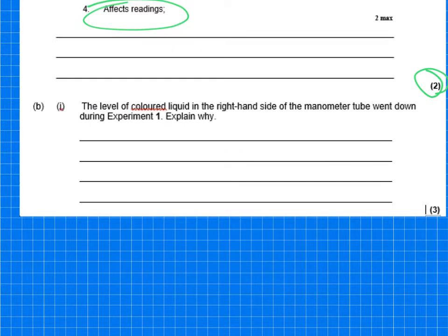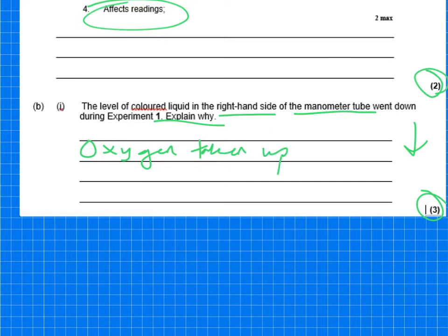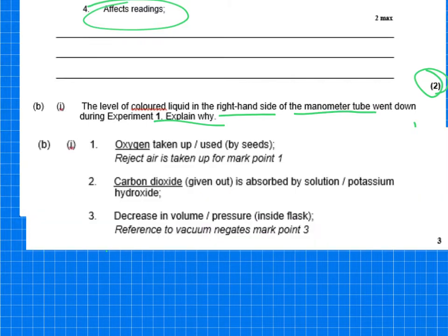So 1b, it says the level of the coloured liquid in the right-hand side of the manometer tube went down during experiment 1. Explain why. And that's three marks. So if you remember, obviously the seeds are going to be respiring, so oxygen is going to be taken up. So oxygen is going in. It's taken up by the seeds. It's nice and simple. And we know the CO2 is going to be absorbed by the potassium hydroxide. And therefore, that explains why there's a decrease in volume and pressure. So therefore, it went down. But you don't have to repeat that it went down, because that will just be repeating the stem of the question. So that's just testing you know how the respirometer is going to work.